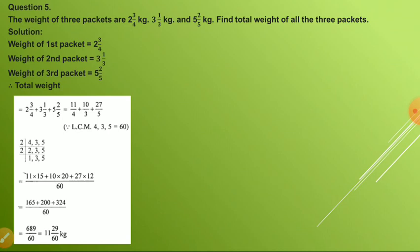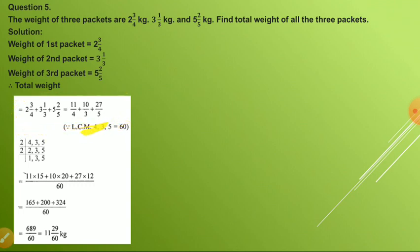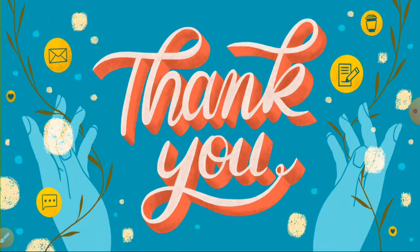Question number five: The weights of three packets are given and you have to find the total weight. Just like adding the weights of three girls — 24 kg, 25 kg, and 20 kg gives you the total — here you add all three packet weights. Converting all to improper fractions gives 11/4, 10/3, and 27/5. By solving all with LCM, you will get the answer 11 whole 29/60 kg.